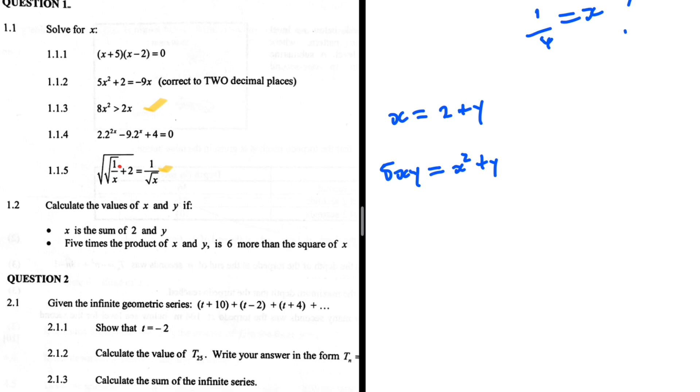Now if you look at this, we have a normal simultaneous equation problem. We have x equals 2 plus y as equation 1, and this is equation 2. We want to substitute equation 1 into equation 2.